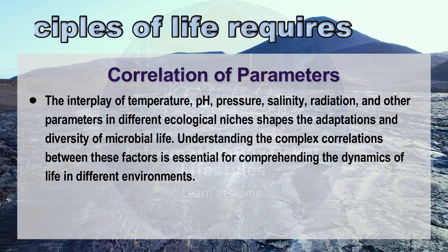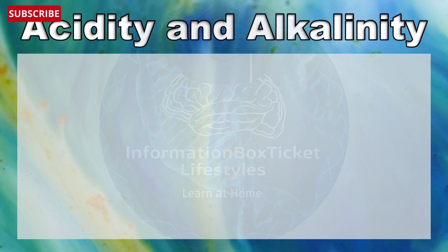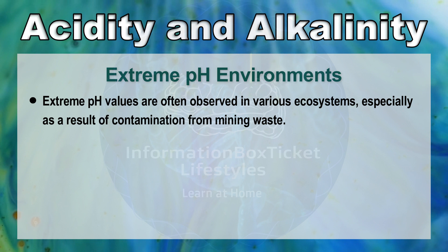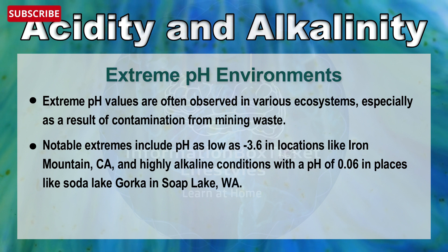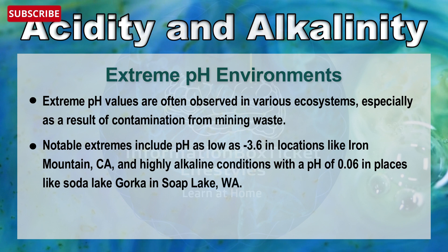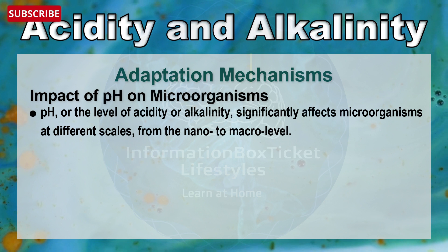Extreme pH environments are often observed in various ecosystems, especially as a result of contamination from mining waste. Notable extremes include pH as low as minus 3.6 in locations like Iron Mountain, California, and highly alkaline conditions at pH 0.06 in places like Soda Lake Gorka and Soap Lake, Washington. pH, the level of acidity or alkalinity, significantly affects microorganisms at levels from nano to macro scale.